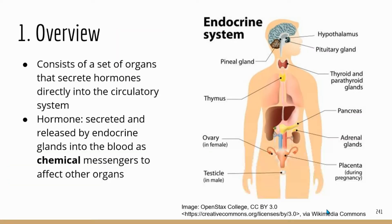I found a diagram that has all the important endocrine glands mentioned in the TEAS study review, except for the placenta. You can ignore the placenta in this diagram, but you need to know all the other endocrine glands and where they're located. This system is composed of a set of organs that can secrete hormones.